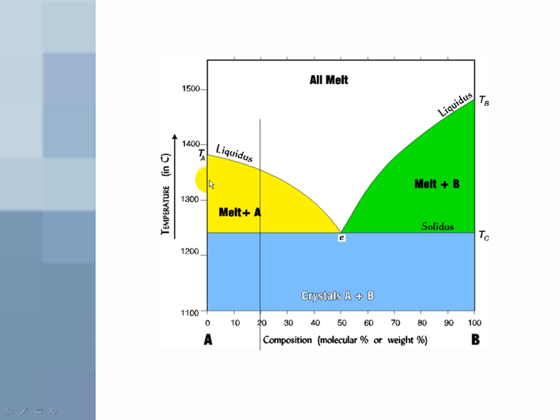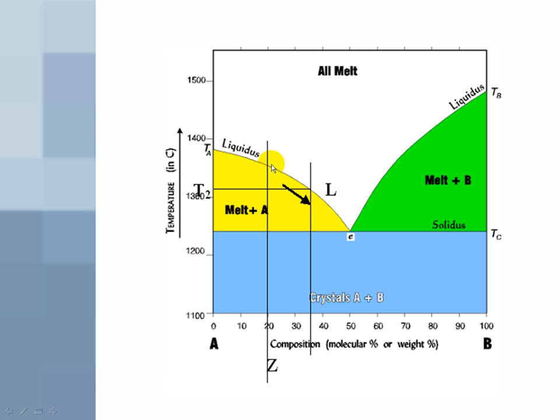Notice that the y-axis has the temperature in degrees. So how do we go about reading this? All right, let's say we start with a melt of composition Z and we cool it. We would have to cool it to this point to get any crystals to form.